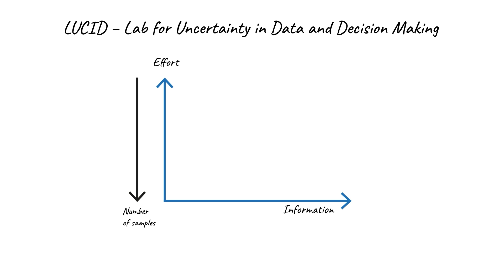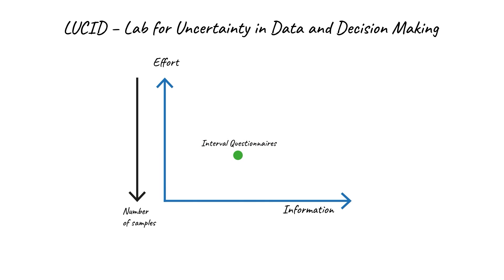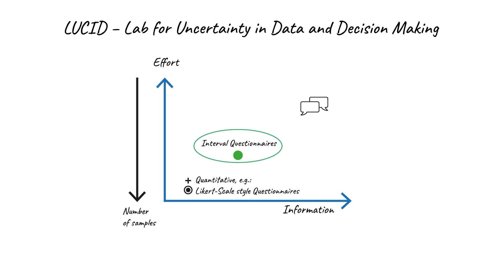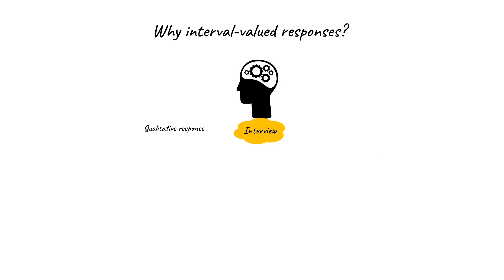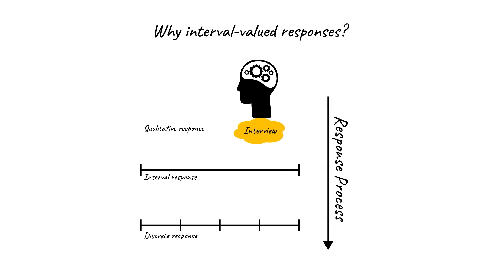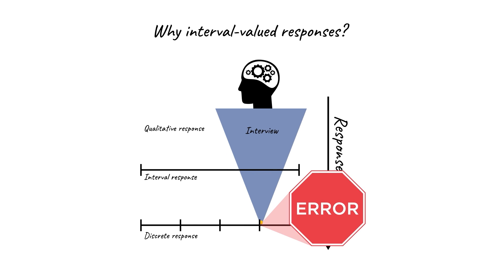To help capture uncertainty, we've created interval-valued questionnaires, which find a quantitative sweet spot between quantitative and qualitative data collection methods. For some judgements, someone's ideal response may be better represented by an interval rather than a discrete point. Responses may need distilling down, but using discrete scales, they are compressed to a single point, which can incur information loss and error.